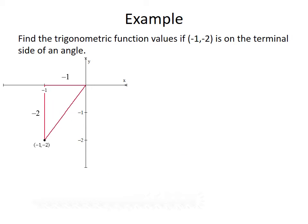Let's look at another example. This time we want to find the trig function values if the point (-1, -2) is on the terminal side of the angle. The terminal side forms a triangle with the x-axis with a horizontal leg of -1, a vertical leg of -2, and an unknown hypotenuse. So r equals the square root of (-1) squared plus (-2) squared. 1 squared is 1, (-2) squared is 4, so r equals the square root of 1 plus 4, which is the square root of 5.